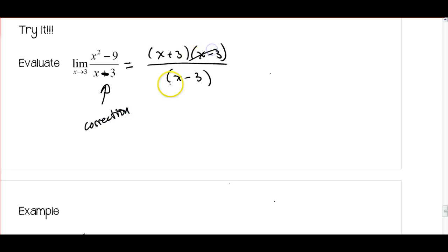And then these two terms are going to cancel out by direct substitution, now our limit's going to be three plus three, or nine.